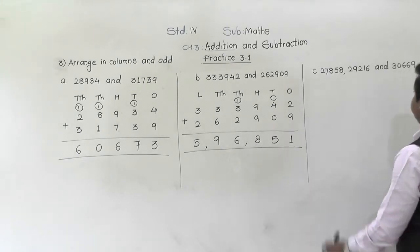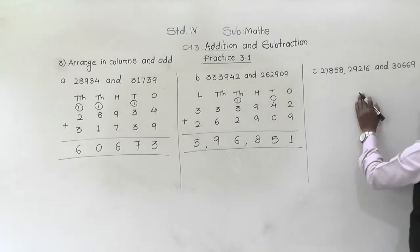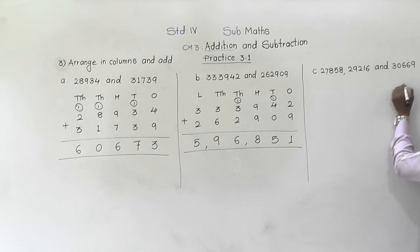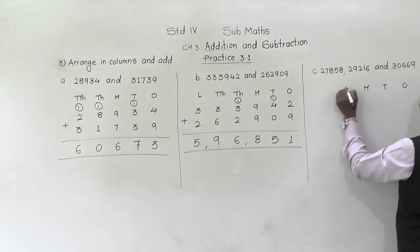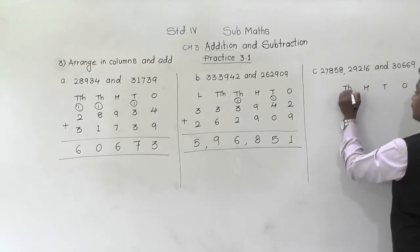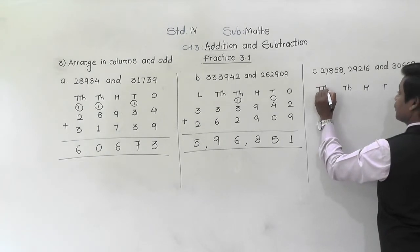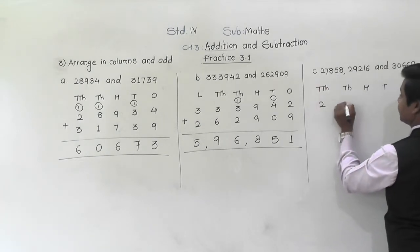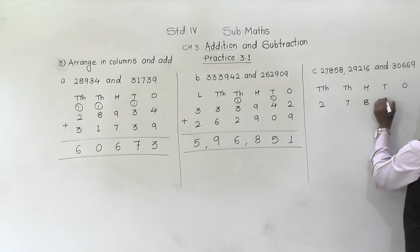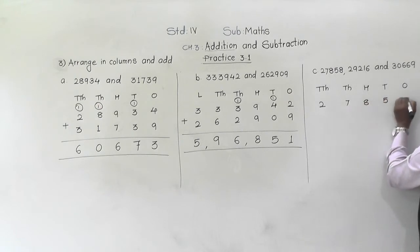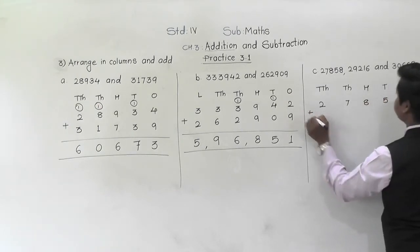Next, there are 3 numbers; these are 5-digit numbers, so we will write 5 places. The first number is 27,858 plus...